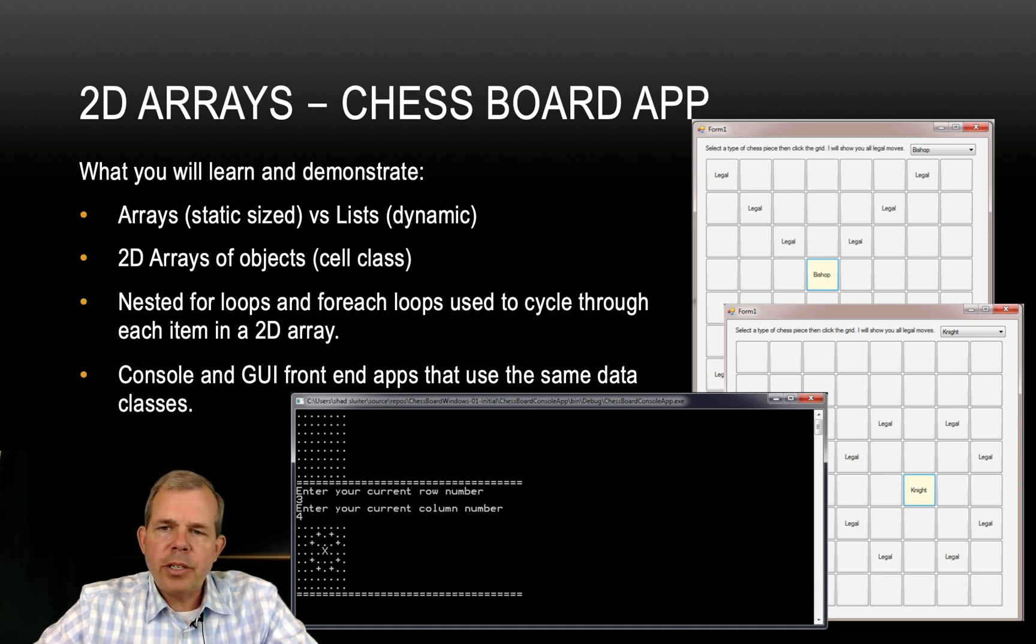The project here is going to work with a chessboard, an 8x8 grid. The idea is that we will have a cell for each square, each cell will have a property or a list of properties, and then we're going to create some logic that allows us to calculate where you would be able to legally move if you placed a piece on the board.